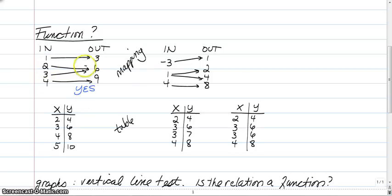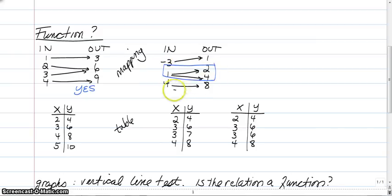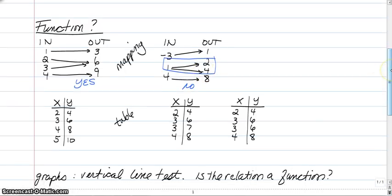We have an issue with the second mapping. You plug in negative 3 and get 1, but then you plug in 1 and sometimes get 2, sometimes get 4. That makes it not a function — just like putting in a dollar and sometimes getting a Pepsi, sometimes a Mountain Dew. Every time you plug in a specific input, you're supposed to get exactly one output, not a changing result.